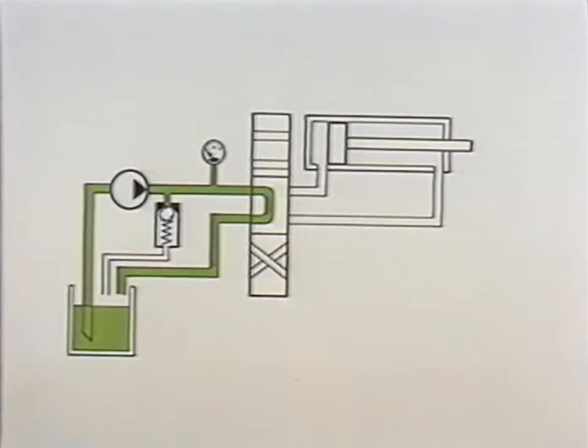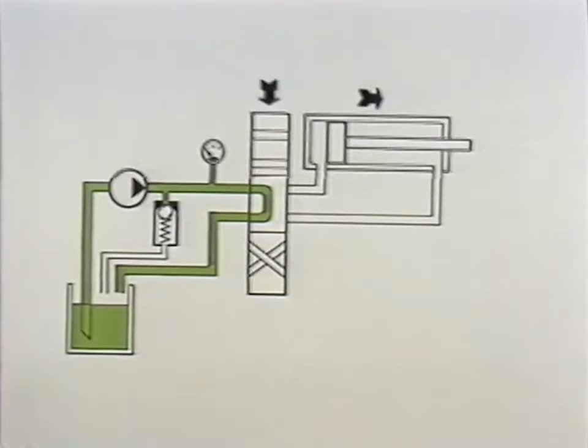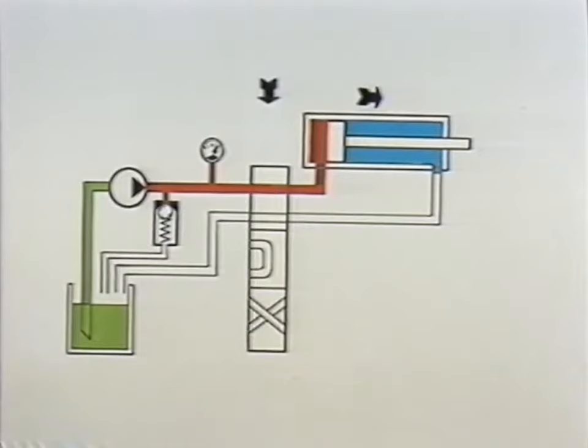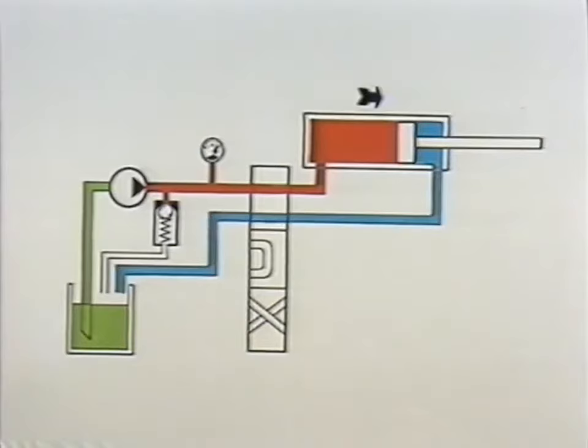The valve is activated so that the piston in the cylinder moves in the direction of the arrow. The pump supplies fluid to the plus side of the cylinder, the red section, and the piston starts to move in the desired direction.